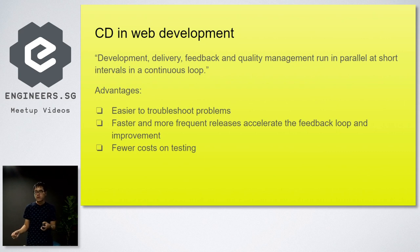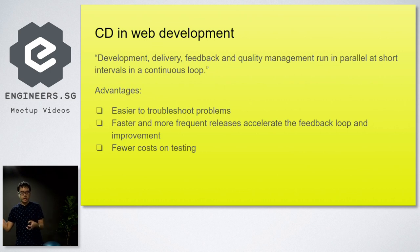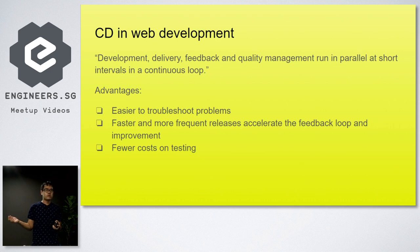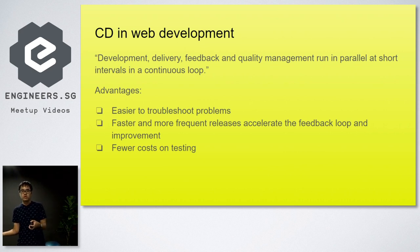What is continuous delivery in web development? Continuous delivery is the development, delivery, feedback, and quality management that runs in parallel at short intervals in a continuous loop — you're doing development work, staging code into the production server, and receiving feedback from the code all at the same time. The advantages include: being able to troubleshoot problems, perform quicker and more frequent releases according to the feedback loop, accelerate improvements so we can improve our code base faster, debug faster since we know the errors, and reduce cost on testing.